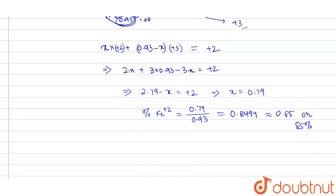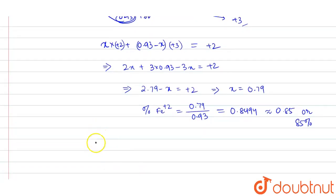Now what we can do is: one mole of this compound, that is Fe₀.₉₃O₁, contains 85 percent of Fe²⁺ atoms.